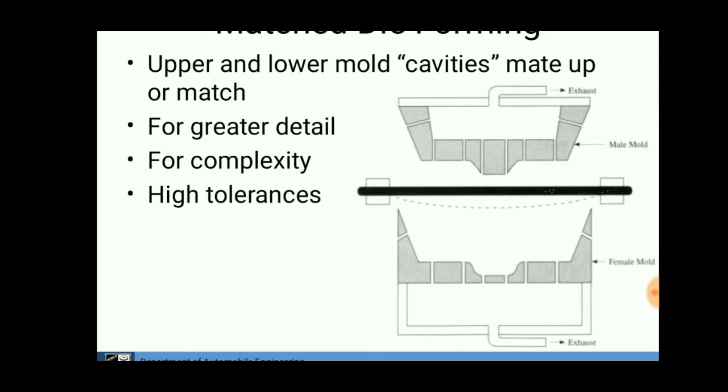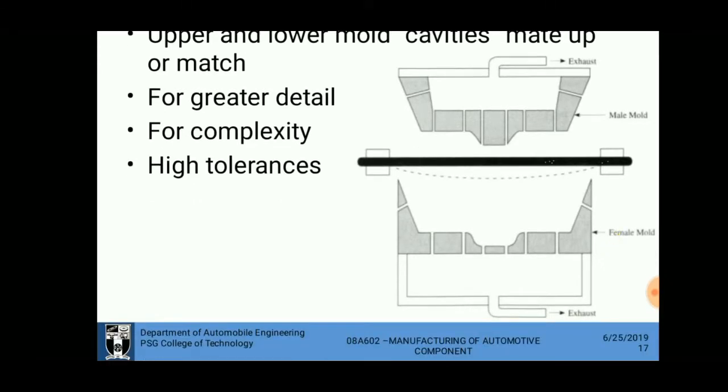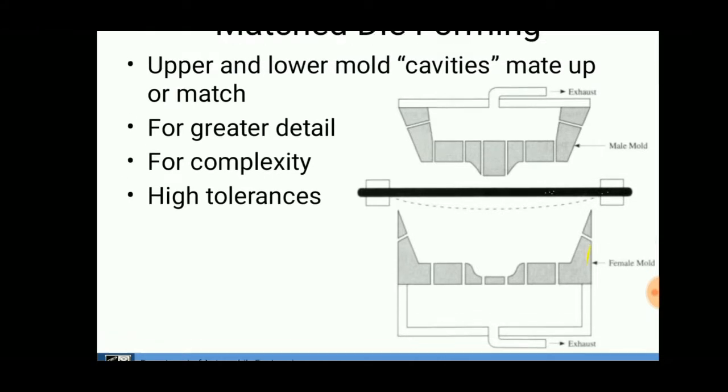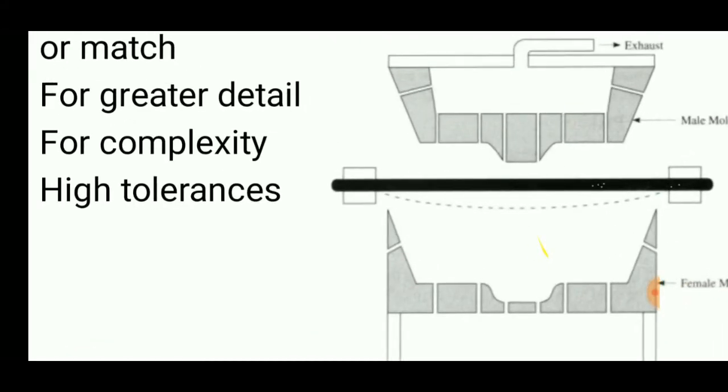It consists of two parts: an upper part or male mold and a lower part or female mold. Both the male and female mold consist of an exhaust and vents to remove or free up the excess air while processing.